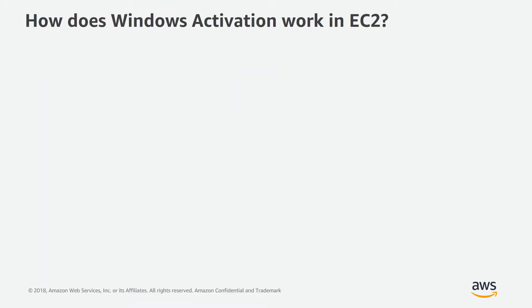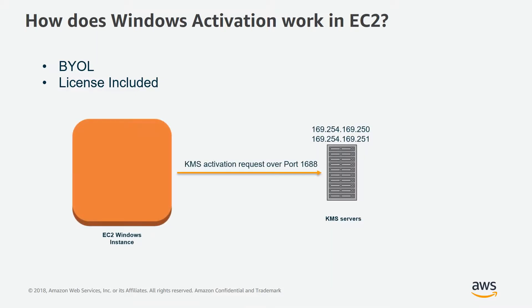How does Windows activation work in EC2? There are two ways to license Windows instances in EC2: either BYOL or license included. In this video, we are going to only focus on license included EC2 Windows instances. License included means EC2 Windows instances get activated against Amazon KMS servers. These KMS servers can be accessed on 169.254, 169.250, and 251 addresses from within EC2 Windows instances.